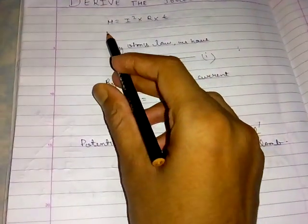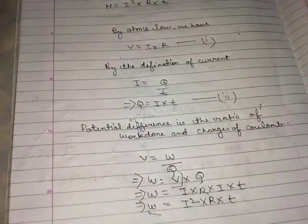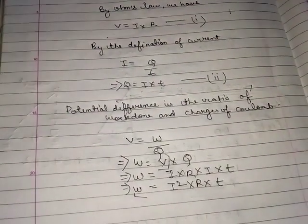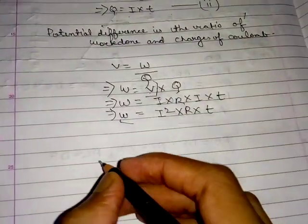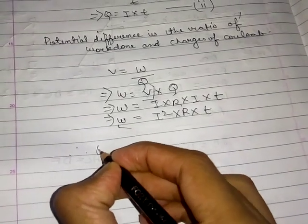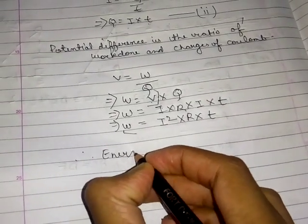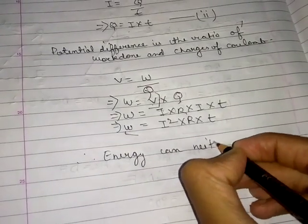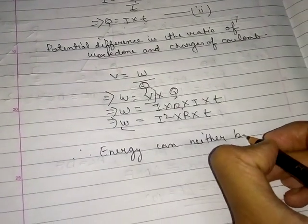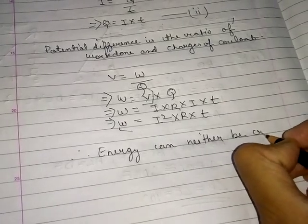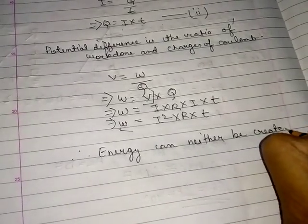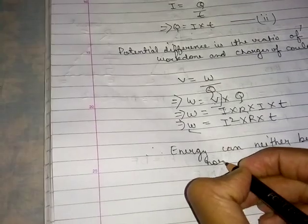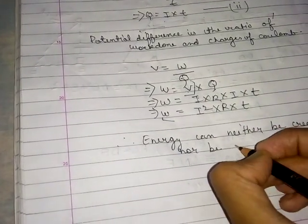Now we have W. We need to prove H, the heating effect. We know that energy can neither be created nor be destroyed.